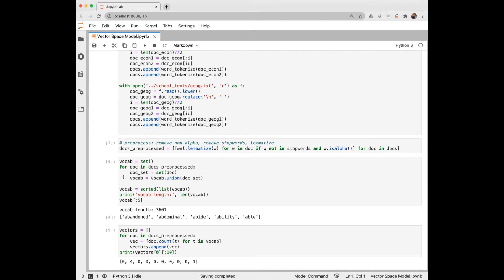Another way I could have done this is just to merge all the lists and then do a set. Then I take my vocabulary and sort it alphabetically. We can see that it has 3601 words and I printed out the first five here. You can see that it is sorted.